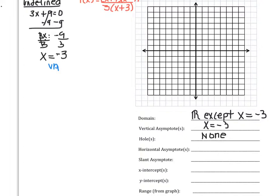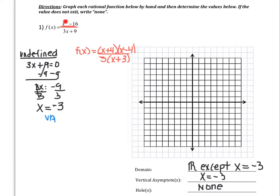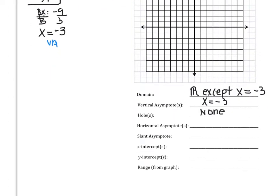For horizontal asymptotes, we have to look at the original equation and analyze the degree of the numerator and the degree of the denominator. The degree of the numerator, the power, is 2, and the degree of the denominator — the highest power — is 1. Because this 2 is greater than this 1, that means there is no horizontal asymptote, but there is a slant asymptote. So we're going to go ahead and find that.